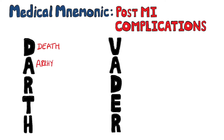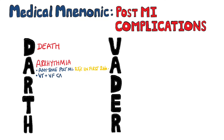A is to remind you of arrhythmias, which can happen due to the change in substrate from ischemia and necrosis, as well as the autonomic dysfunction that is often seen. Arrhythmias can happen any time post-MI but are particularly frequent early on — 25% of patients who will have an arrhythmia will have them in the first 24 hours.